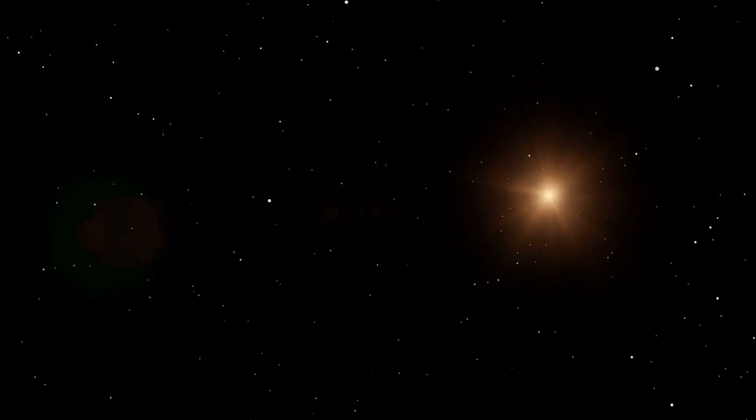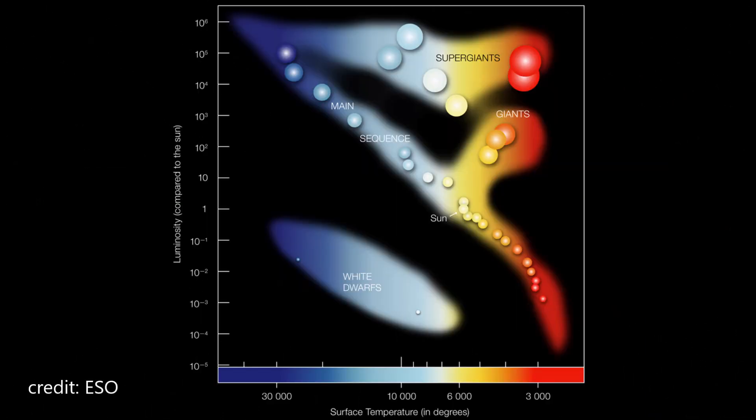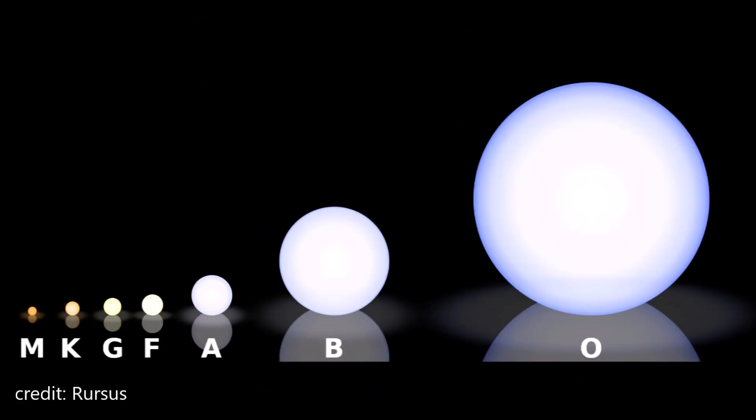We will begin by discussing the different types of stars and how they are categorized. Later we will also explore the Hertzsprung-Russell diagram, a graphical representation of the relationships between different properties of stars. Additionally, we will cover the spectral classification system, and the use of spectral lines to determine the composition and temperature of stars.